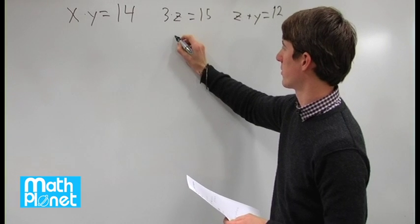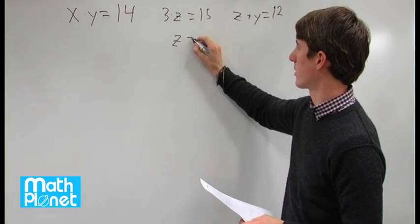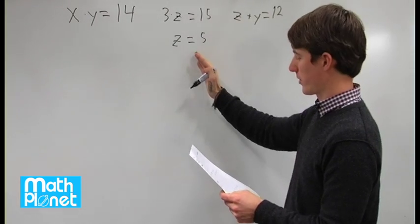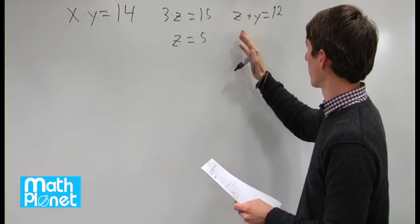So let's start with this one since it's the simplest. Dividing both sides by three gives us z is equal to 5. Great, so we can plug this in to another problem, another equation.